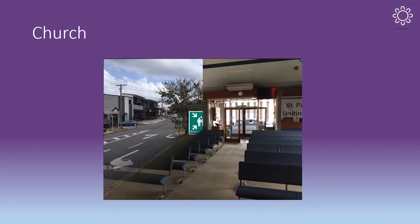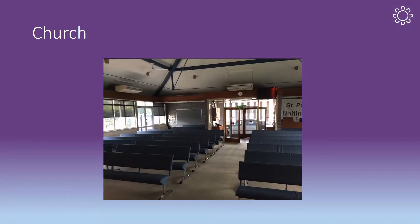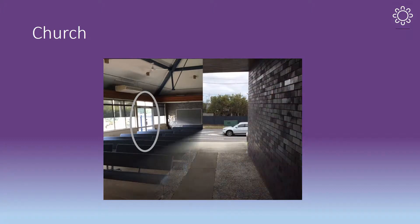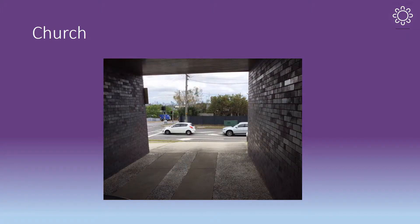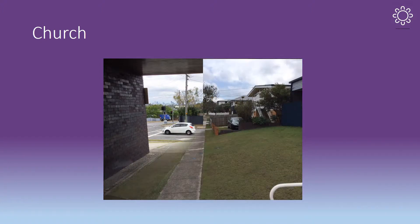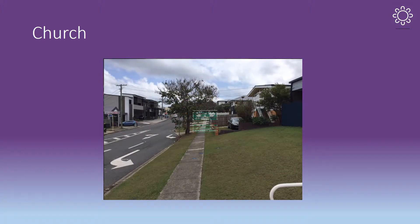A second door is also available at the rear of the church. Occupants can move to this door, turn right and proceed out onto the driveway. Once outside, follow the driveway to Minamine Street and move up the street to the assembly area in front of the manse.